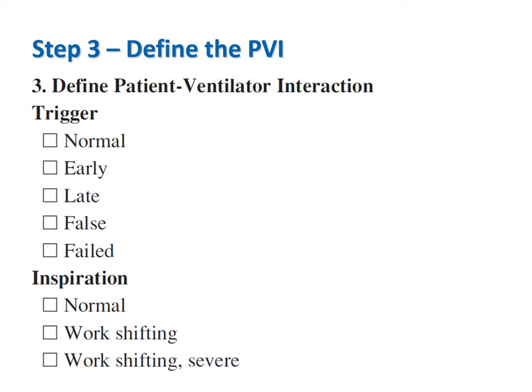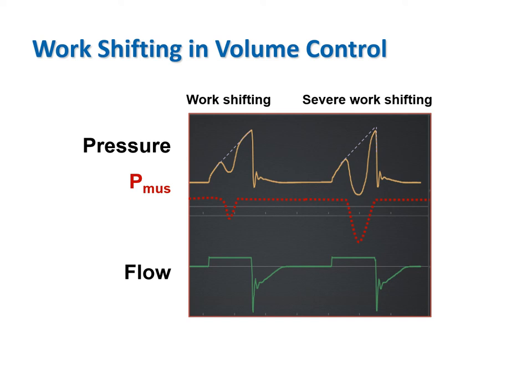Continuing with step 3, we next examine the inspiratory portion of the pressure, volume, and flow waveforms. During volume control, an increase in PMUS causes a decrease in PVENT according to the equation of motion. Because work assistance is proportional to both pressure and volume, a decreased PVENT means decreased work output of the ventilator—work has shifted from the ventilator to the patient. In extreme cases, the airway pressure dips below the set pressure, which is clinically unacceptable, indicating severe discomfort in a conscious patient and could lead to diaphragm damage or pulmonary edema.